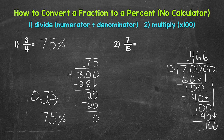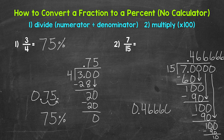We end up with 100 again, so we have 100 divided by 15. How many whole groups of 15 in 100? Well, 6. 6 times 15 is 90. Subtract: 100 minus 90 gives us 10 again. And again, those sixes are going to continue forever. So what we can do — I'm going to write the decimal off to the side. So we have 0.46666... and these continue on. We have a repeating decimal.